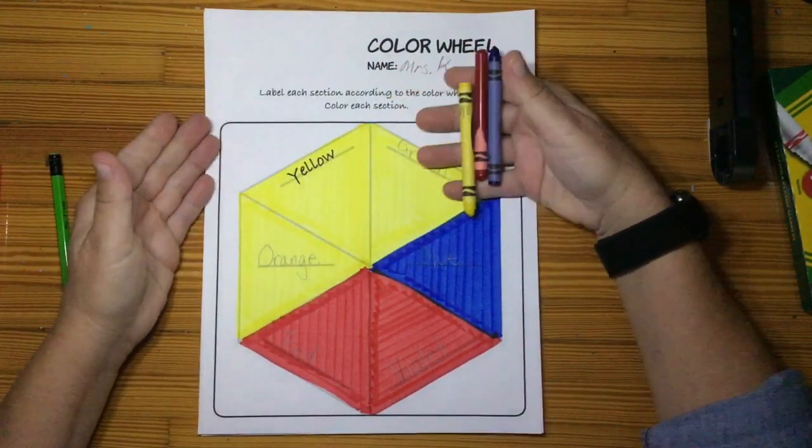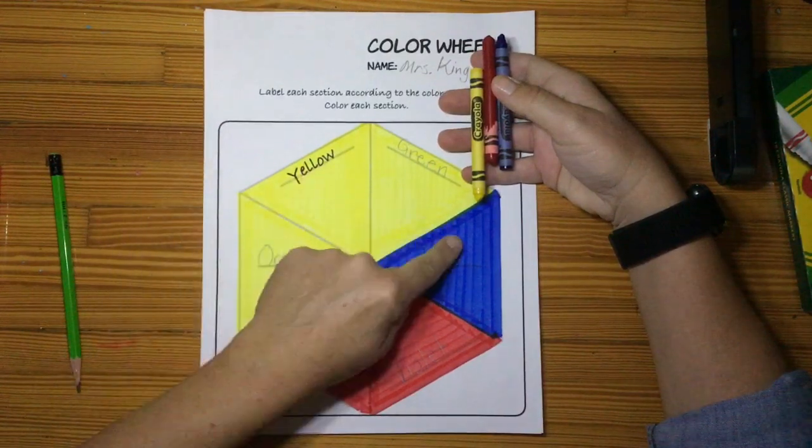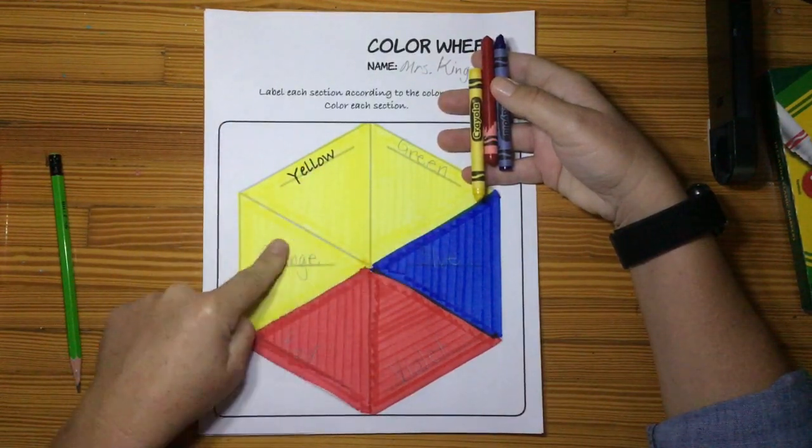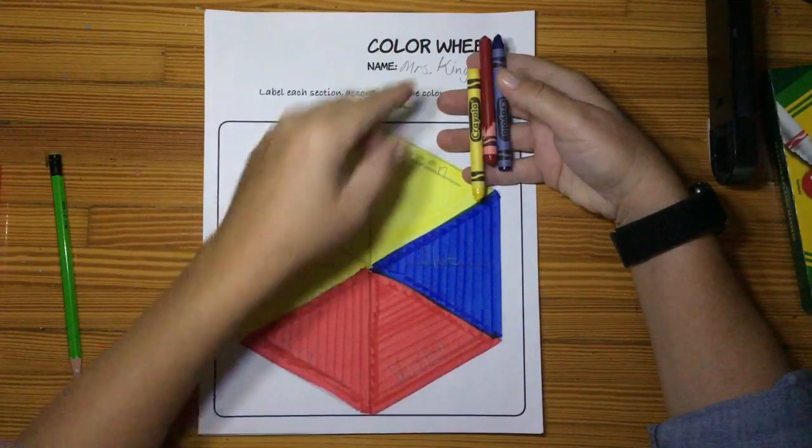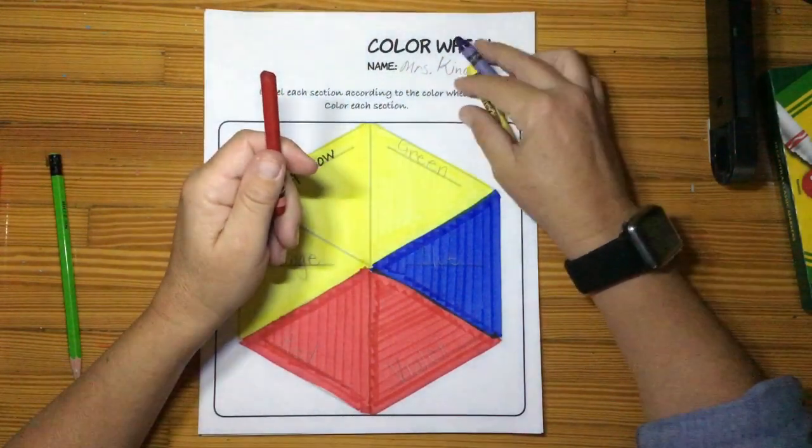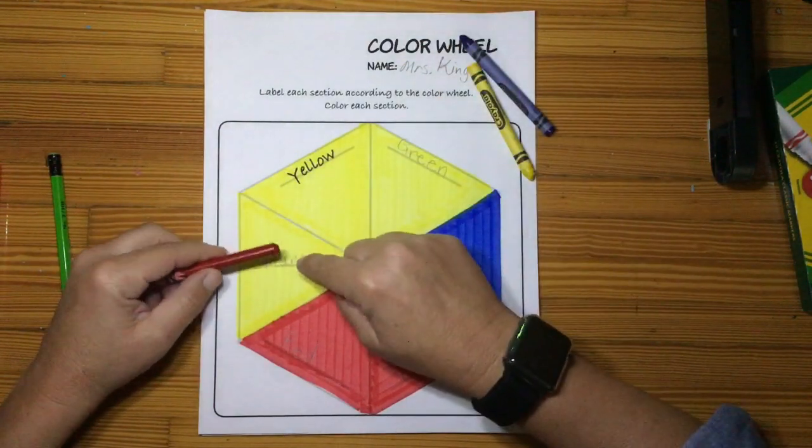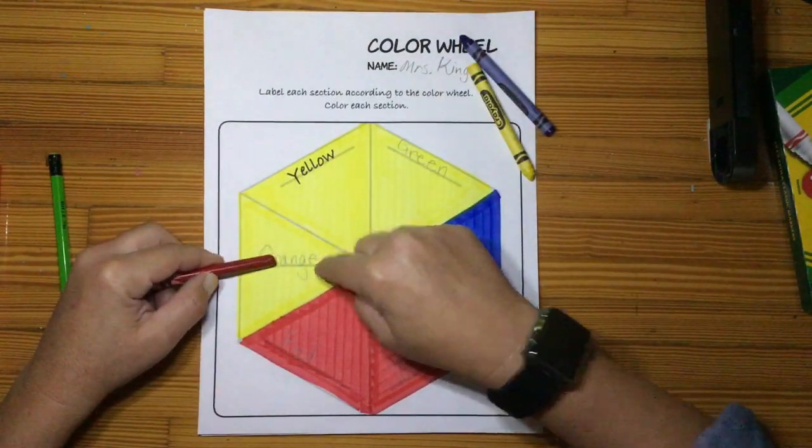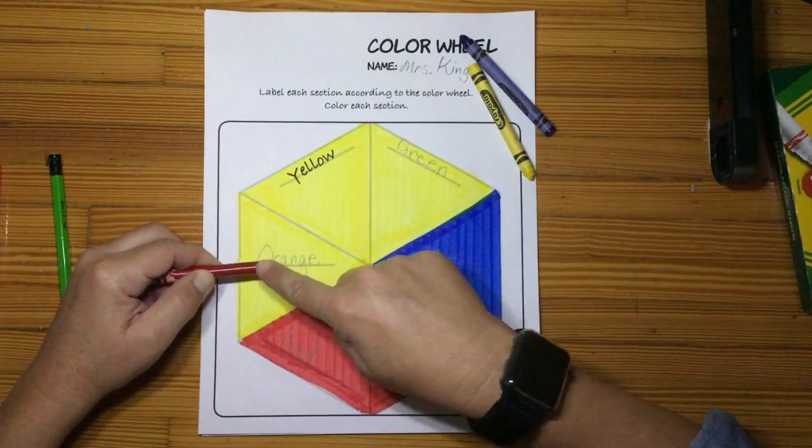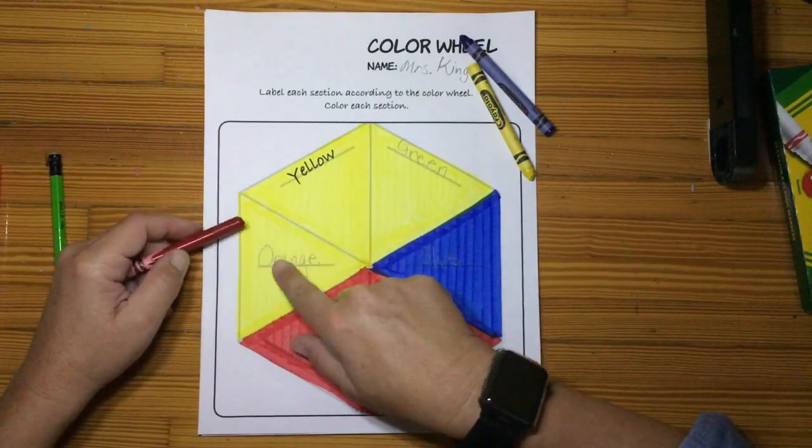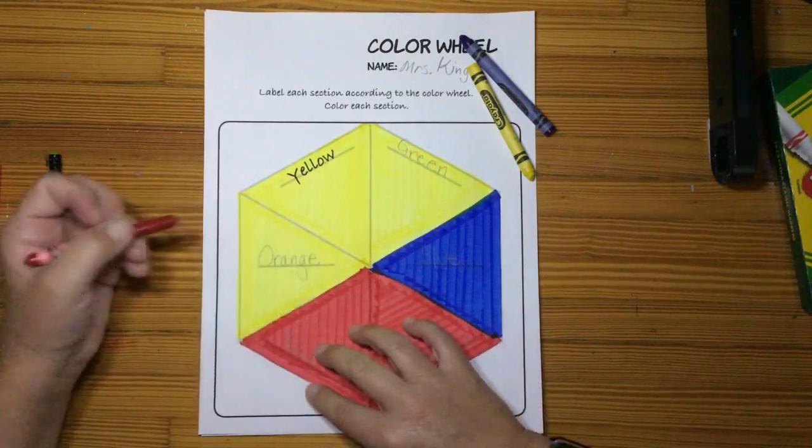Let's look at your crayons. These are your primary colors. These will be your secondary colors. Job one: get your red crayon, and since we're coloring orange, red is right beside orange, and we already have this yellow, put your red on top.